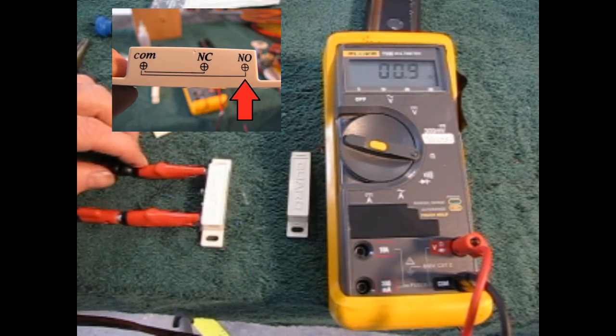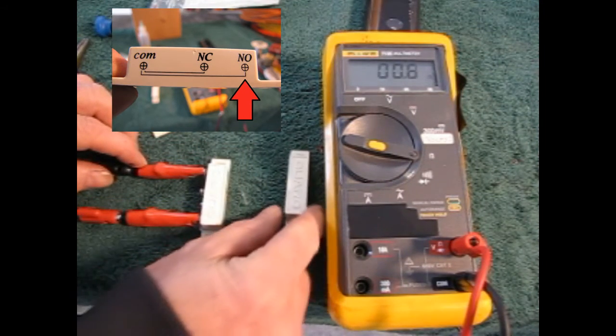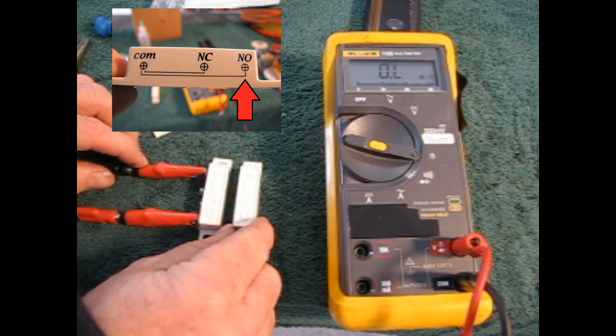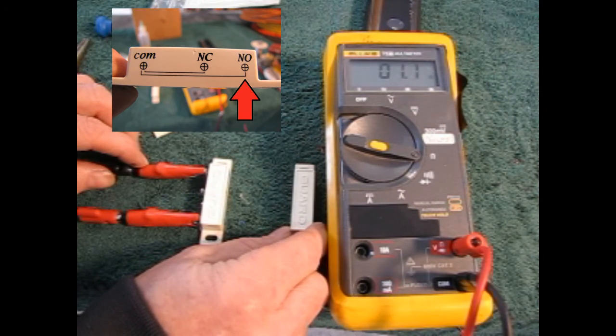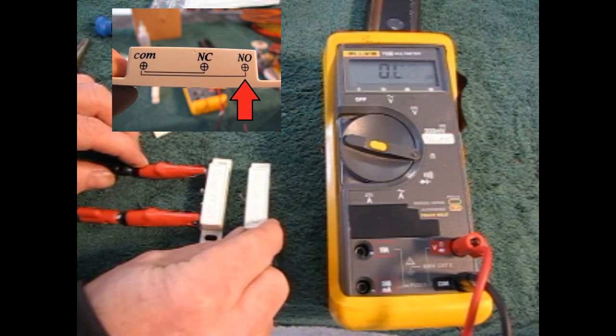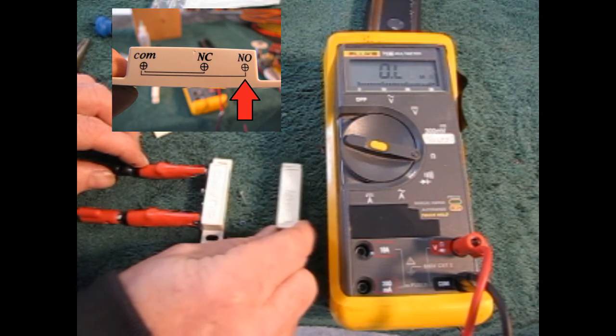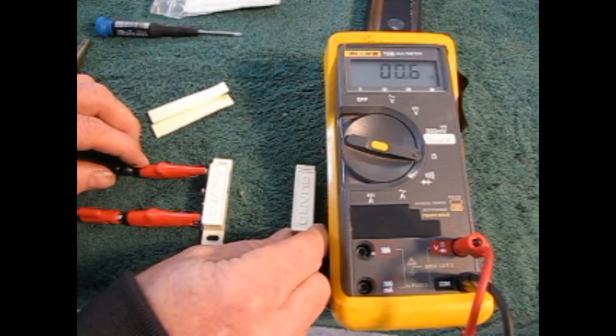I've hooked my meter leads up to common and normally open. When the two switch parts are next to each other, you have a normally open circuit. Move them apart, it goes to a short. So, half the switch on the door frame, the other half on the door. When the door opens, the switch closes and the light will turn on.